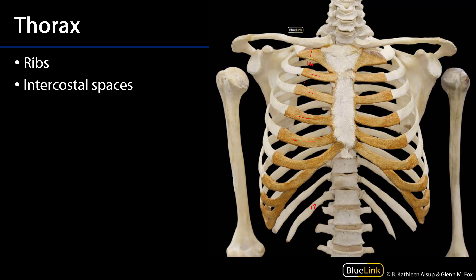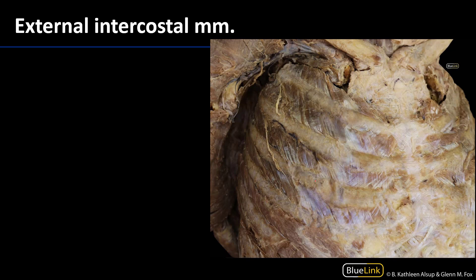So this is the first intercostal space, the second intercostal space, all the way down to the 11th intercostal space. These intercostal spaces are filled with muscles and neurovasculature. The thoracic cage is a dynamic space where the costovertebral joints are somewhat mobile, and ribs can therefore swing upward and outward or they can swing downward and inward.